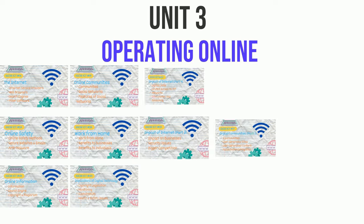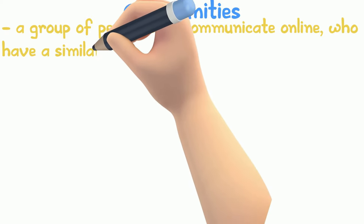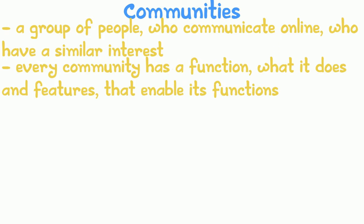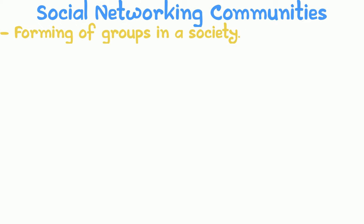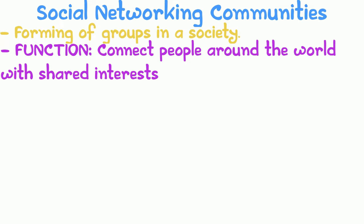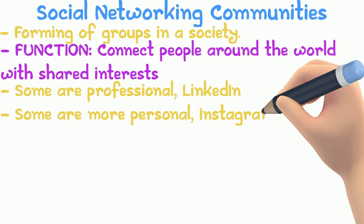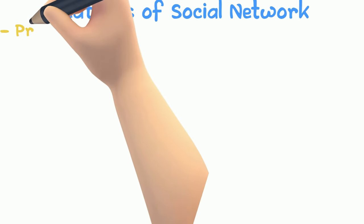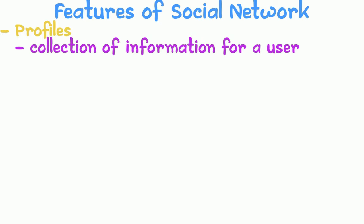We got a request for the entire online communities chapter. An online community is a group of people who communicate online with a similar interest. Every community has a function and features that enable it. Online social networking communities — like Instagram, Facebook, and YouTube — function to connect people around the world with shared interests. Some are professional like LinkedIn, others more personal like Instagram.